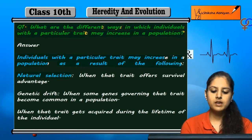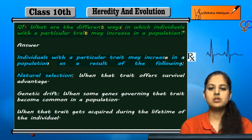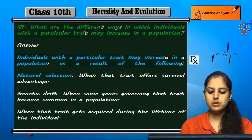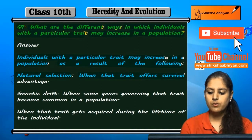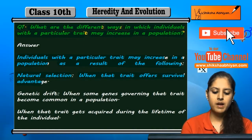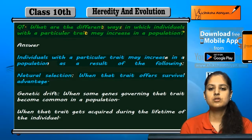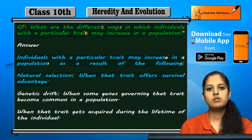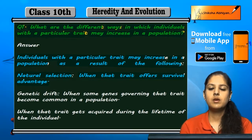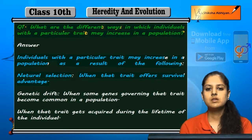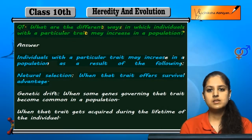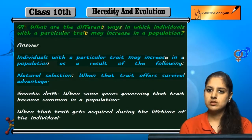The first way is by natural selection, when that trait offers a survival advantage. If the survival advantages of the trait are positive, then it can increase in this way.